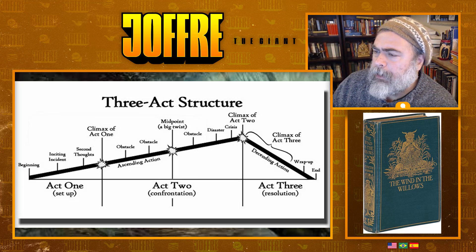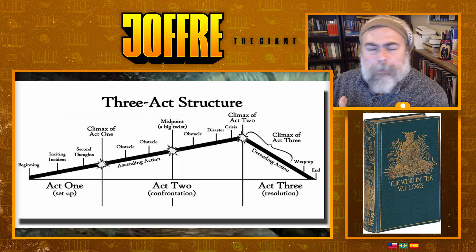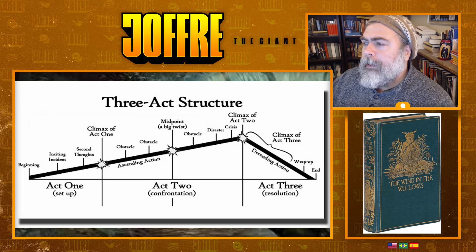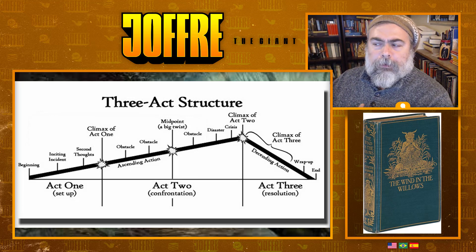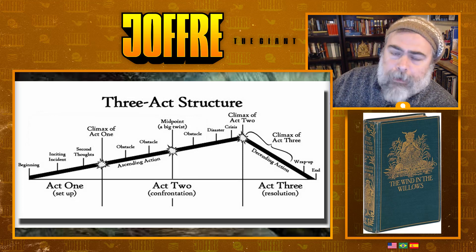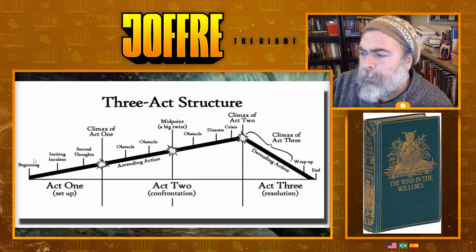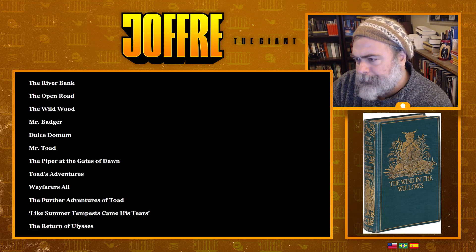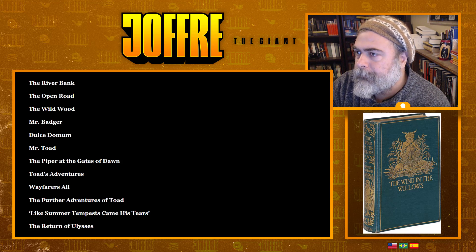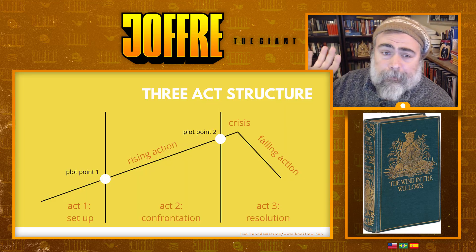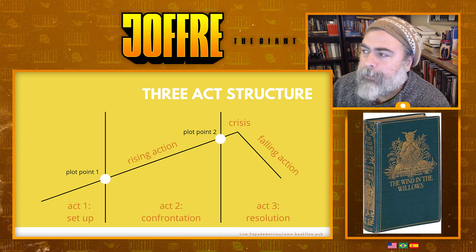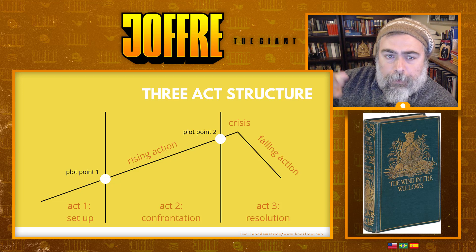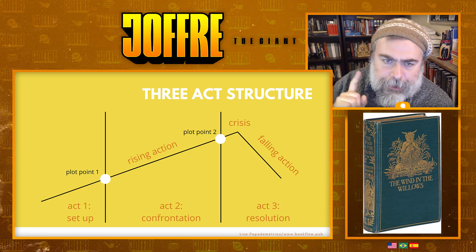In this graphic I'm showing you, it's actually pretty detailed: beginning, inciting incident, second thoughts, moments of doubt, the climax of act one, obstacles, and the ascending action, a big twist, and so on. But of course we can render this much more simply — the three-act structure: the setup, the confrontation, the resolution. The rising action and the crisis. This is what's important. Now, if you read The Wind in the Willows, what is the crisis? What is the climax? Is it the fight for Toad Hall? It doesn't feel quite right.